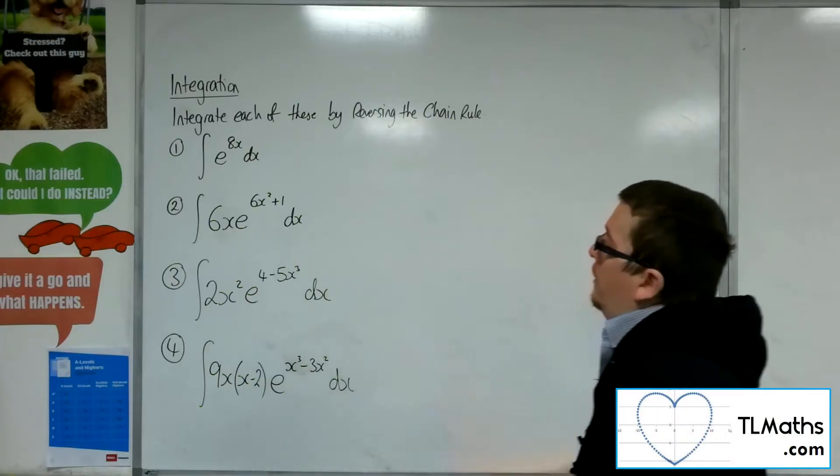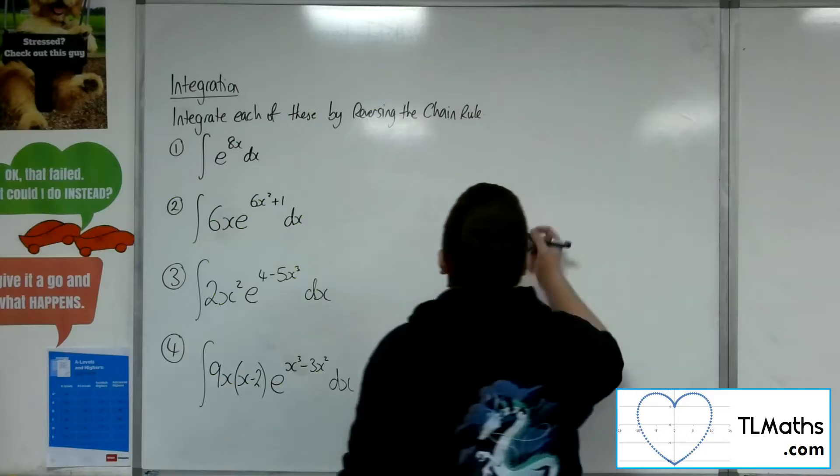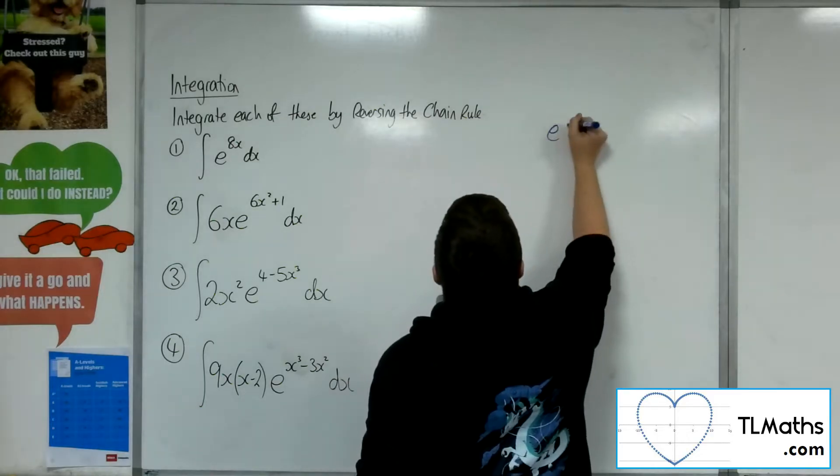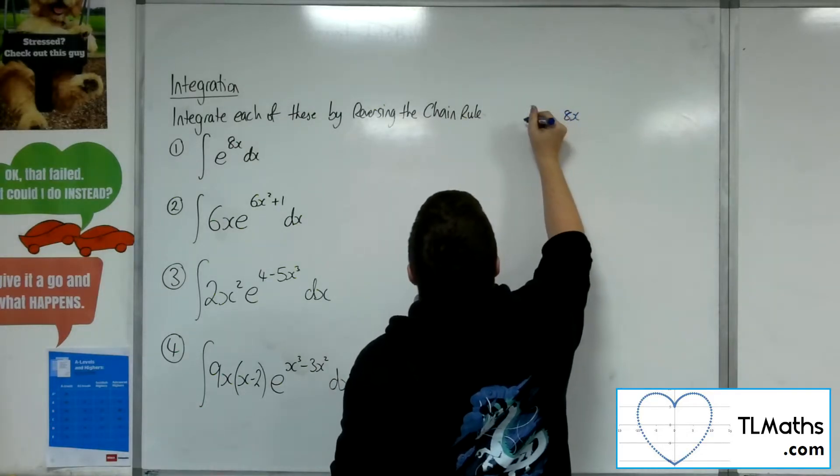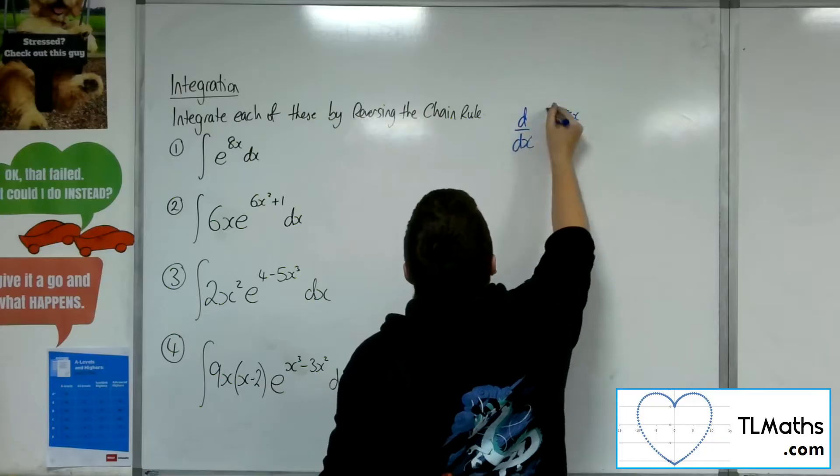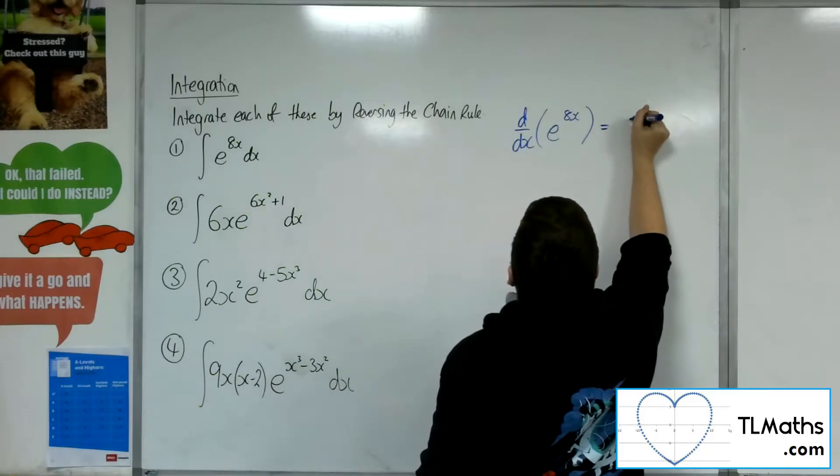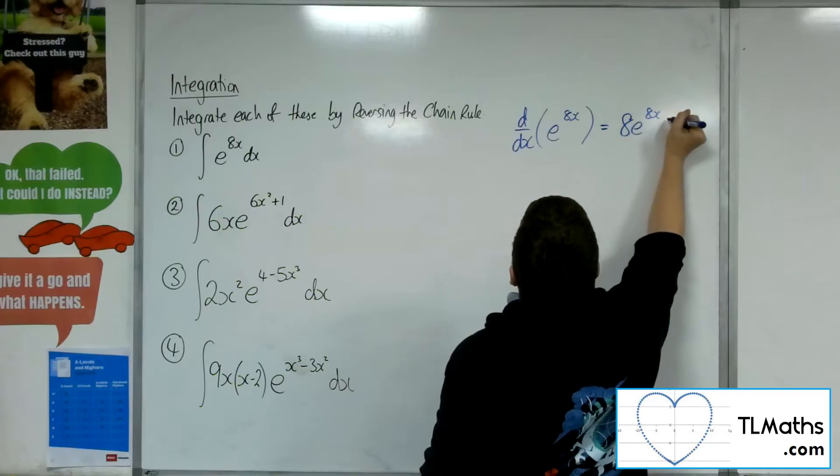So in the first one, I've got the integral of e to the 8x dx. So if you just consider differentiating e to the 8x, then this is 8e to the 8x.